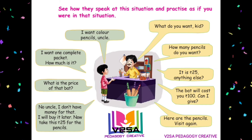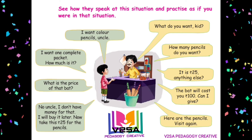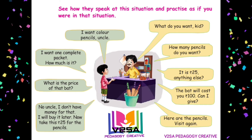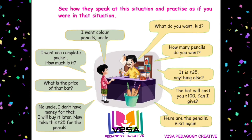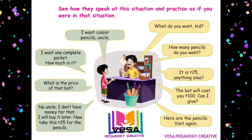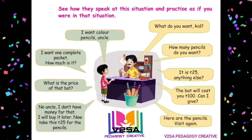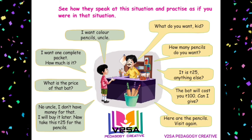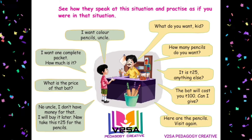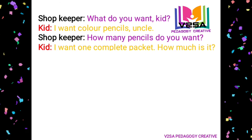Kid: What is the price of that bat? Shopkeeper: The bat will cost you rupees 100. Kid: No uncle, I don't have money for that. I will buy it later. Now take this rupees 25 for this pencil. Shopkeeper: Here are the pencils. Visit again.